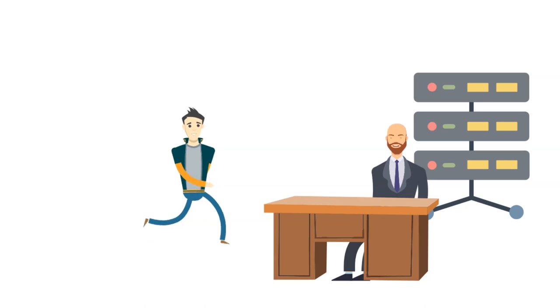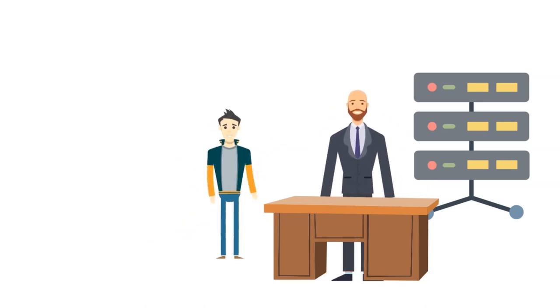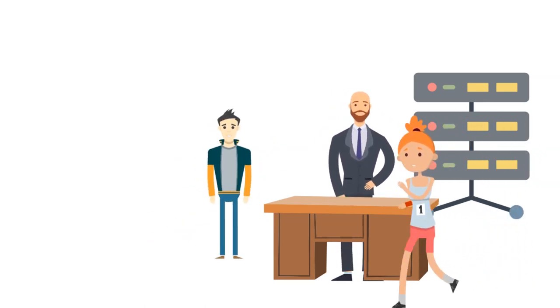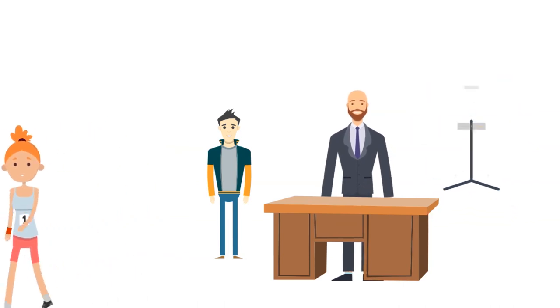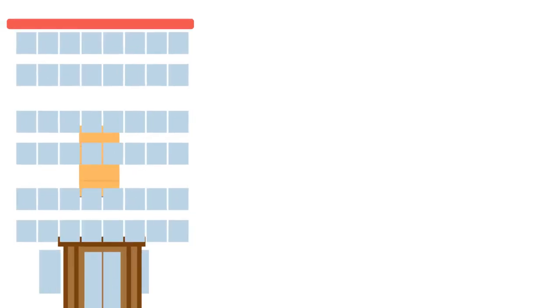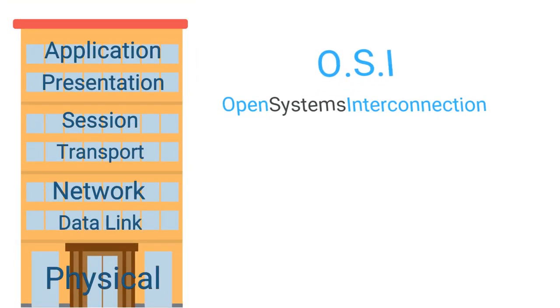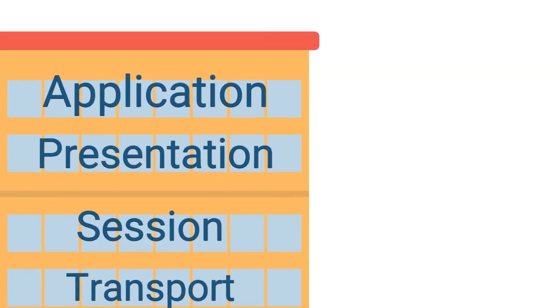Once at the web server, he's going to have them send a new PDU back to us with the website data so we can load the web page. To help explain this, we're going to use the OSI, or Open Systems Interconnection, model. So, let's start from the top floor, the application layer.